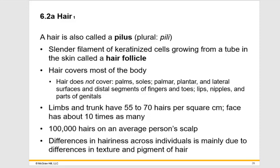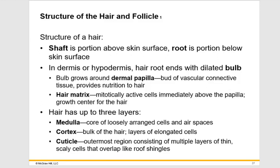This last video for the topic of the integumentary system will briefly describe some of the important structures of hair and fingernails. The hair itself is called a pilus, which is found inside a tube called the hair follicle. The shaft is the portion of the hair that protrudes from the skin surface, while the root is the portion found below the skin surface.